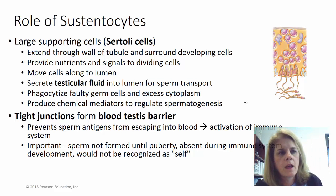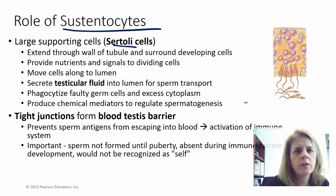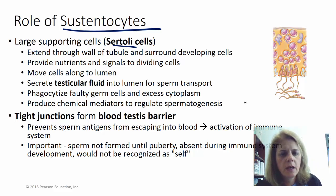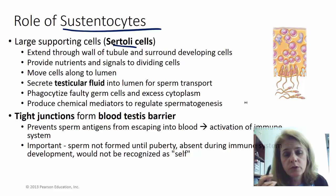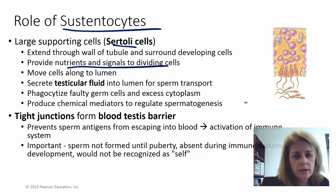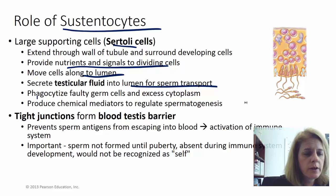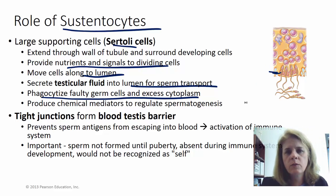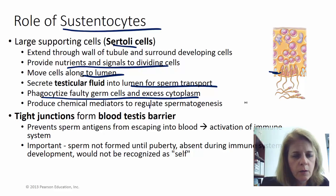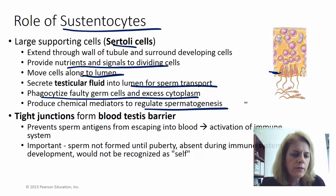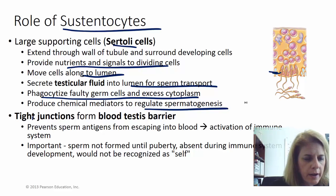The Sertoli cells — also called Sertoli cells depending on your source — are the nursery cells where sperm develop. They provide nutrients, signal cells to undergo division, help move cells toward the lumen, provide fluid for sperm transport, and phagocytize any excess cytoplasm or faulty germ cells. They also produce the chemical messengers that regulate spermatogenesis.